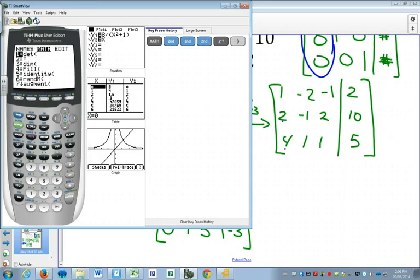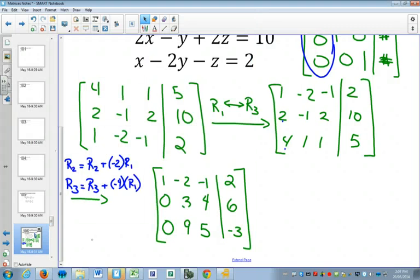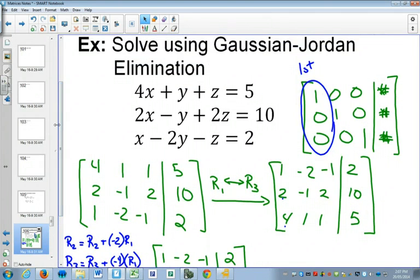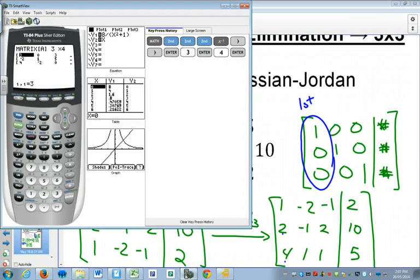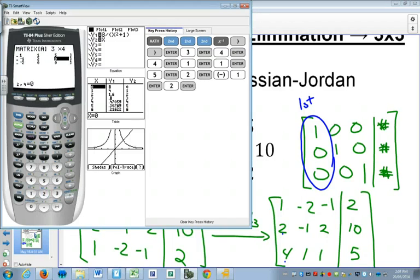Go to edit. And we're going to put the augmented matrix in entirely. So that makes it three rows, four columns, three by four. And we're going to enter in the original matrix, which was 4, 1, 1, 5; 2, negative 1, 2, 10; 1, negative 2, negative 1, 2.